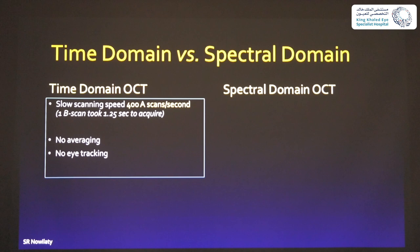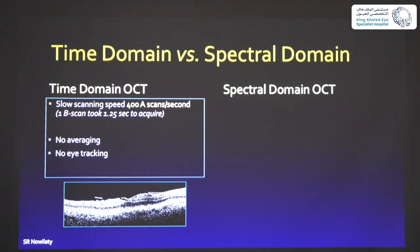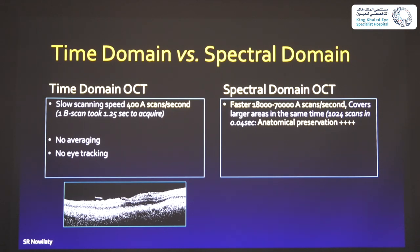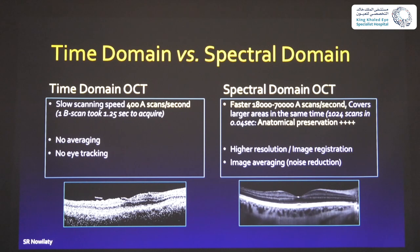In time domain OCT, you have a slow scanning speed; you can't get any averaging because every single B-scan comes in at a different place, and you can't do any eye tracking. In spectral domain OCT, all the B-scans are taken at once and the speed can go up to 70,000 scans per second, covering a larger area at the same time. Those images can be averaged together — meaning multiple cuts are taken and noise is removed, anything that doesn't repeat itself in the same cut — giving you a much clearer, crisper image.